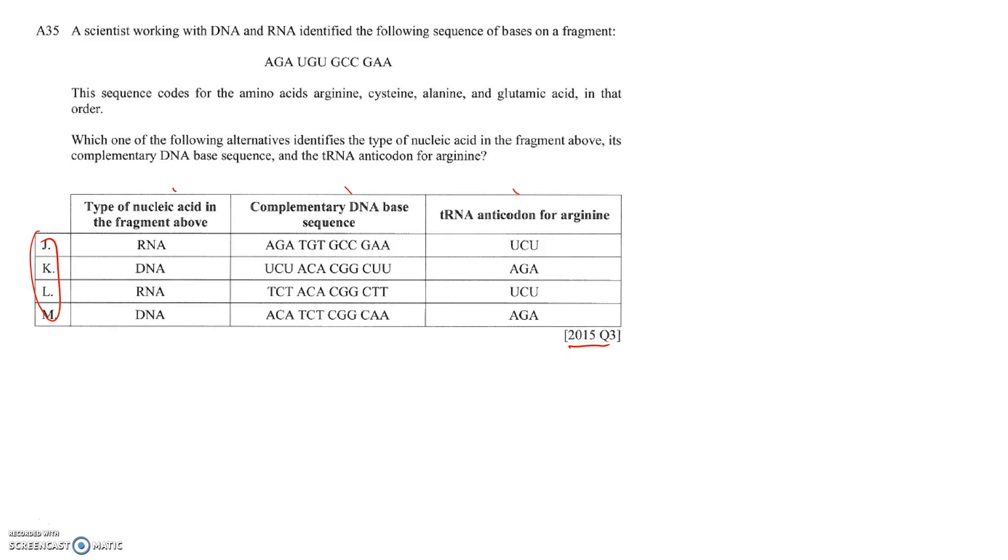First thing to look at is the type of nucleic acid in the fragment. I'm going to notice straight away that there's two U's in there, so we know that this is not DNA. We can cross out that one as being DNA and that one as being DNA. Our options are now reduced to J or L.